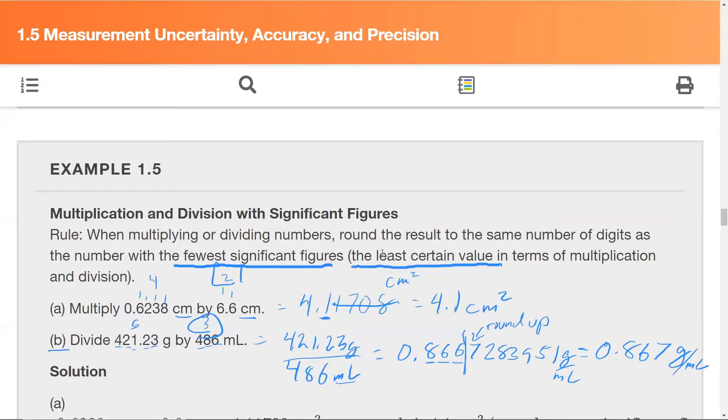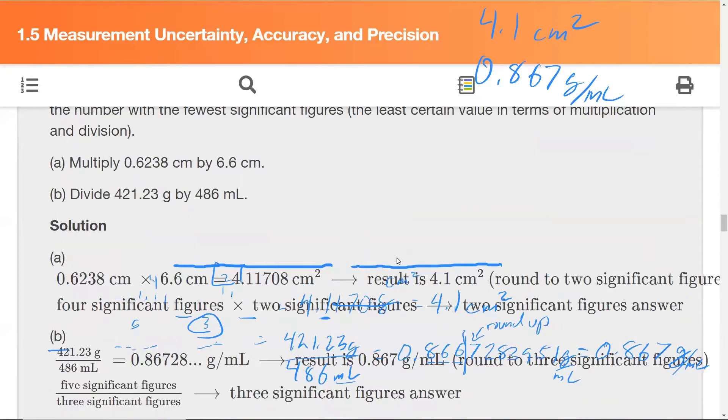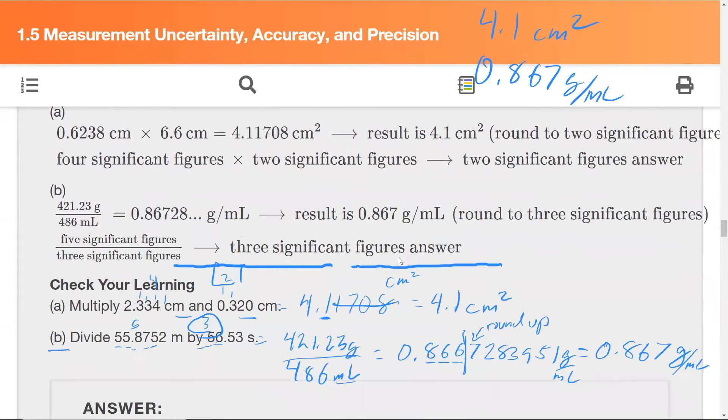As always, we need to scroll down to see how we did there. I'm going to write them up on the top. That way I have the answer, and I can get rid of the work if it gets in the way. But I can scroll down just enough. What does it say? Yes, 4.1 centimeters squared, 0.867 grams per milliliter.